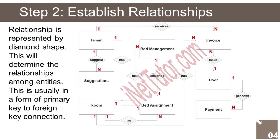After we have specified our entities, it is time now to connect or establish a relationship among the entities. 1. A room contains one or more beds — one-to-many relationship. 2. Room information is included in the bed assignment records — one-to-many relationship.